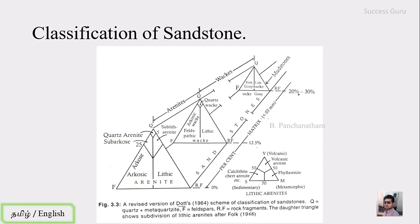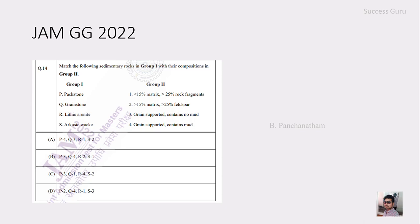There is a question from JAM 2022 where you have to match the left-hand side and right-hand side — matching lithic arenite and arkosic wacke with the correct options. Lithic arenite means matrix percentage is less than 12.5 and rock fragments are dominant. Arkosic wacke means matrix is in the range of 12.5 to 20 percentage with feldspar dominant. The answer is option 8: lithic arenite has less than 15 percent matrix and more than 28 percent rock fragments, and arkosic wacke has more than 15 percent matrix and more than 30 percent feldspar.